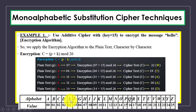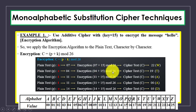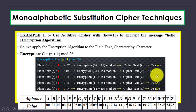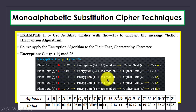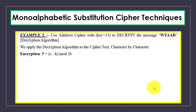Continuing the encryption: for L, value is 11: (11 + 15) mod 26 = 0, and at position 0 we have A. So both L characters encrypt to A. For O, value is 14: (14 + 15) mod 26 gives the final character. Like that we encrypt all characters of 'hello' to produce the ciphertext.